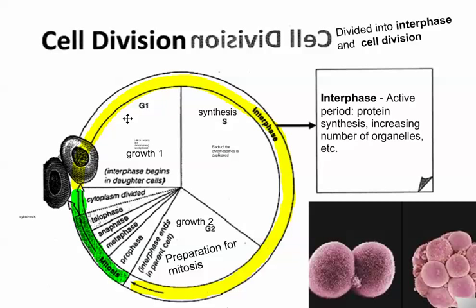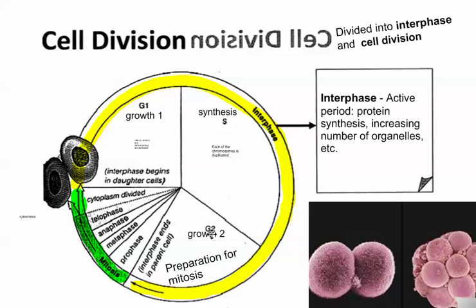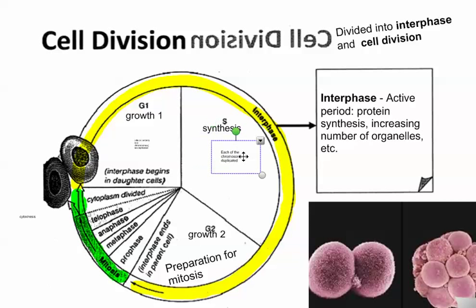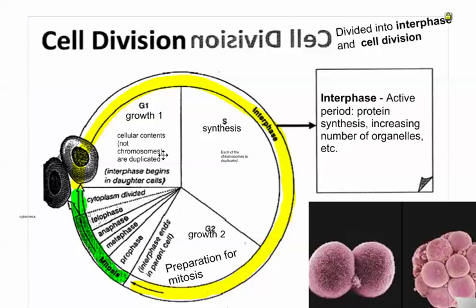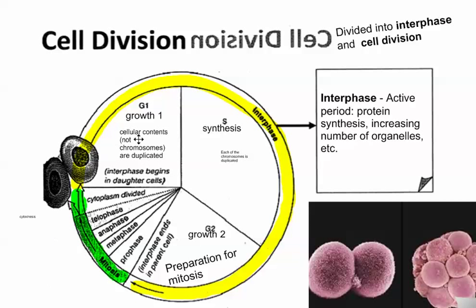We can split interphase into three phases: G1, S, and G2. G1 stands for Growth One, G2 stands for Growth Two, and S stands for Synthesis. In G1, the cellular contents — such as the organelles — are being increased. Not the DNA or the chromosomes; that happens specifically in S phase. Basically, we're increasing the number of organelles.